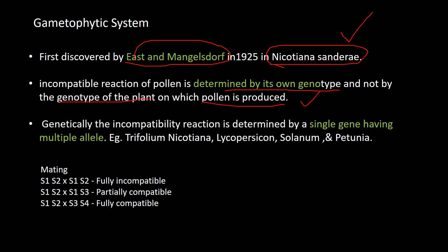The gametophytic system was first discovered by East and Mangelsdorf in 1925 in Nicotiana sanderae (tobacco plant). In this system, the incompatibility reaction of the pollen is always determined by its own genotype, not by the genotype of the plant on which it is produced. Genetically, the incompatibility reaction is determined by a single gene having multiple alleles. It occurs in Trifolium, Nicotiana, Lycopersicon, Solanum, and Petunia.